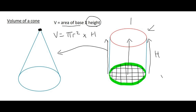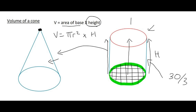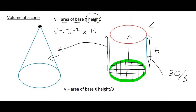So what you could do is imagine this cylinder over here — you would get that one's answer, and let's say the volume was 30. Then for the cone, you would just say 30 divided by 3. So the volume of a cone is equal to the area of the base times the height — same as for a cylinder — and then you divide it by 3.